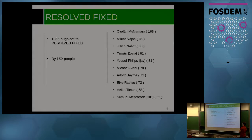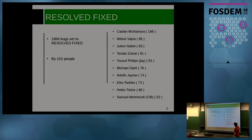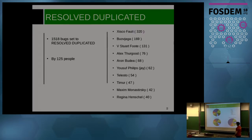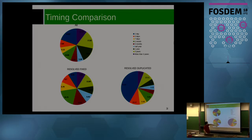For duplicates, 125 people were involved — the top contributors there are QA people, while for resolved-fixed it's mainly developers. On timing: 90% of resolved-fixed cases are closed within a day of the fix landing, and around 70% of bugs are closed within a year. For duplicates, most are identified within the first day, and around 65% are closed within a month.